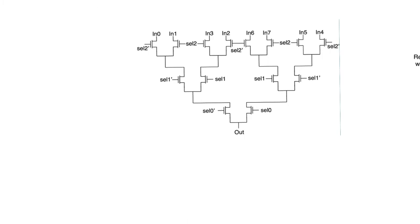Before moving to row decoders we need to discuss one more thing about columns, specifically drivers. Column decoders need to work as multiplexers but also as demultiplexers, especially in RAM arrays, because sometimes we want to write to a specific cell. In an SRAM, the column will be a pair of bit lines, but in a DRAM it will be a single bit line, and we want to write through this column.